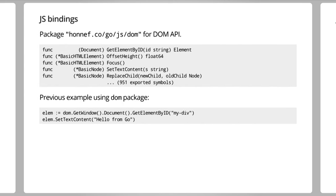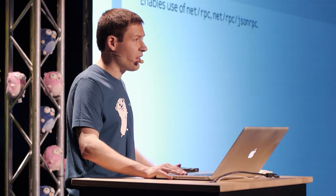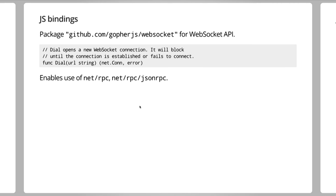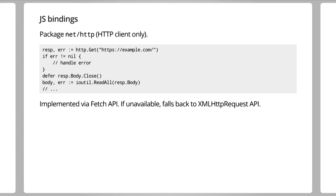Here's the DOM package that gives you the entire DOM API — there are a lot of symbols there. It allows us to write the previous example in a slightly shorter, more type-safe, auto-completion-friendly way. Here's my favorite one: there's a WebSocket package with a dial function that makes a WebSocket connection, blocks until it finishes, and then gives you a net.Conn — that's a standard library interface, very easy to work with. You can use it with net/rpc or the JSONRPC packages. And if you want to make an XHR request with GopherJS, it actually implements the HTTP client of net/http. So you can just do HTTP get the URL, get the response — this is exactly the same Go code you'd write on the backend to make an HTTP request. It's implemented via Fetch in the browser, or if not available, using XHR.